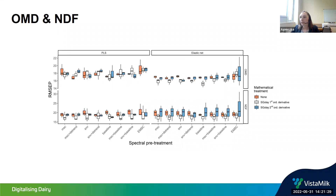For OMD and NDF the situation is somewhat similar: for NDF it would be difficult to find one model that clearly outperforms the others, but for OMD, elastic net gives us better results on the validation set than partial least squares regression.